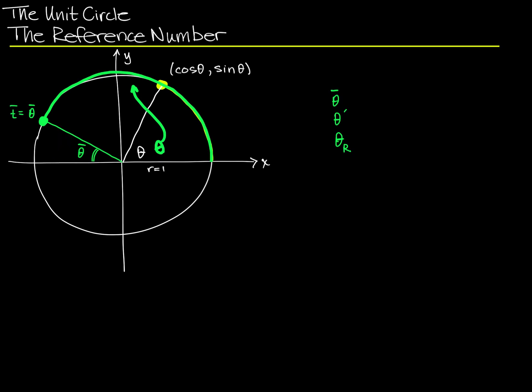What we were before calling a reference angle, this section calls a reference number — that's all there is to it. You can really almost get away when studying trigonometry without knowing what a terminal point is. It's just a point on the unit circle and we already know how to find its coordinates. You can also almost get away without knowing what a reference number is — it's just the reference angle. So you really already know about these things; we're just giving them different names in this chapter.